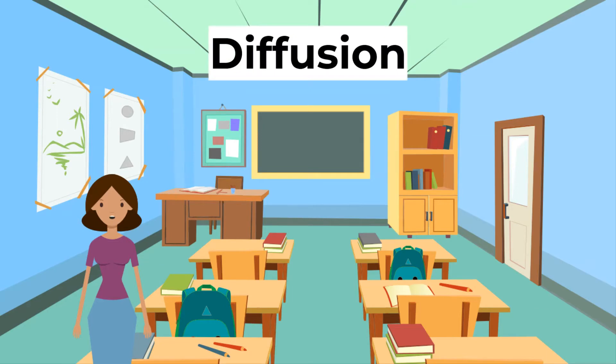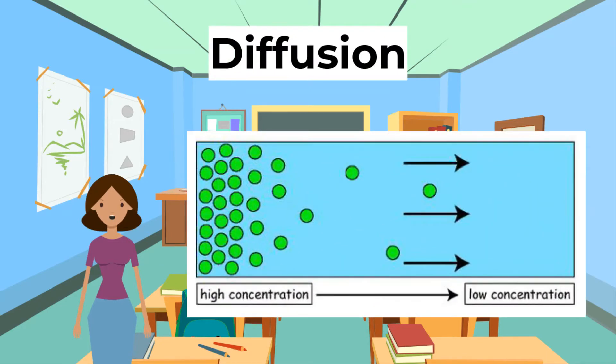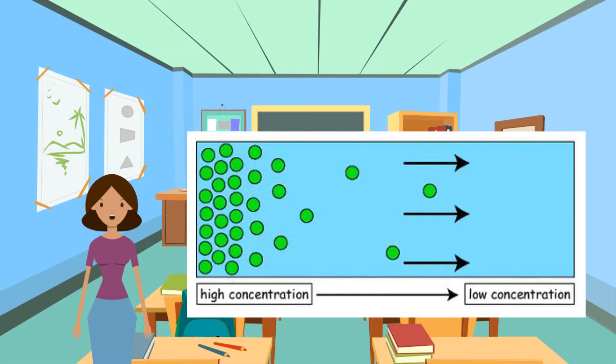Today we will be starting with diffusion. You need to know that diffusion is the net movement of molecules from a region of their higher concentration to a region of their lower concentration down a concentration gradient, as a result of their random movement.